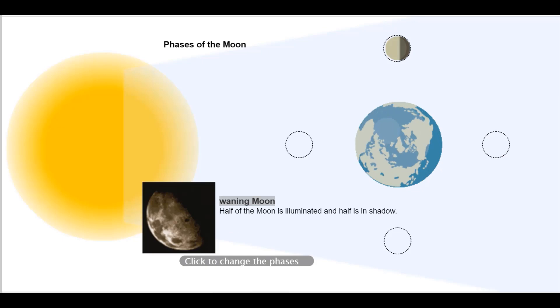Waning moon. Half of the moon is illuminated and half is in shadow. Cuarto menguante. La mitad de la luna está iluminada y la otra mitad está en sombras.